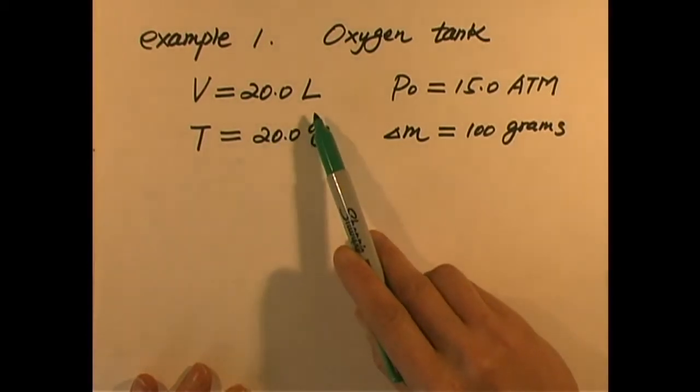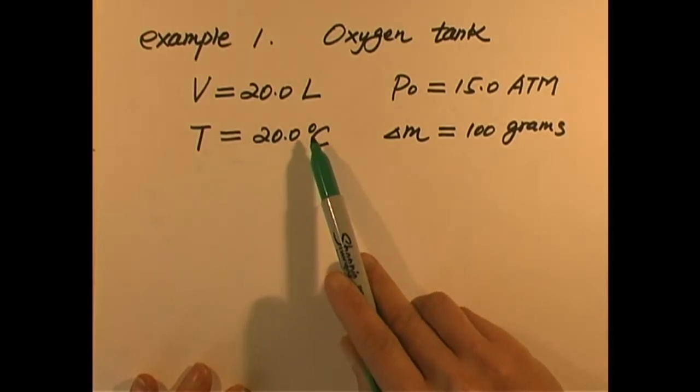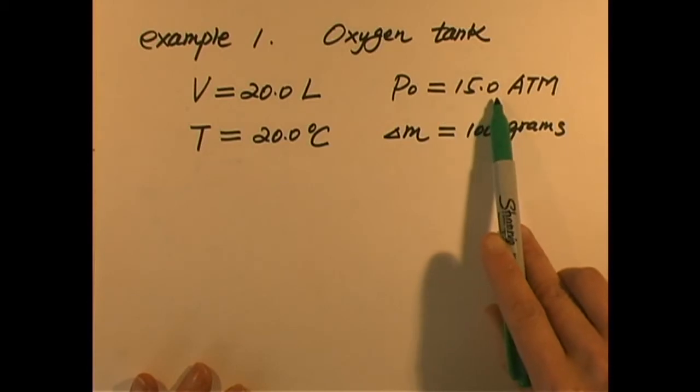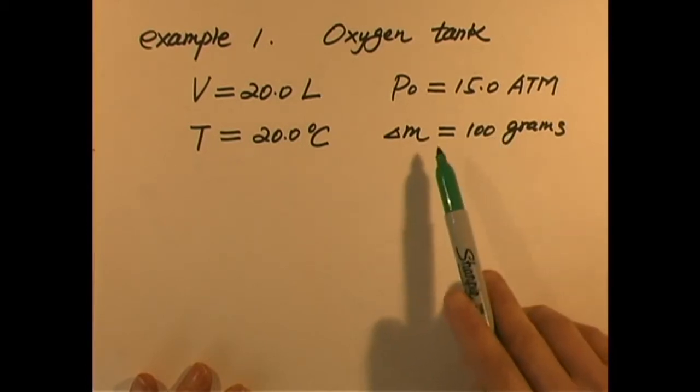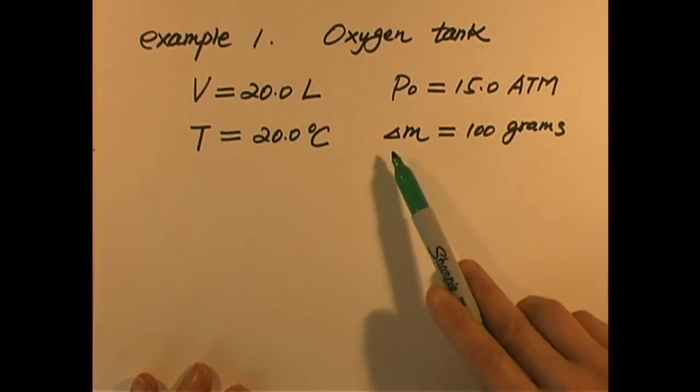Volume is 20.0 liters, and at room temperature 20.0 degrees Celsius, this is oxygen tank. At that time, while it contains oxygen inside, it must have a pressure more than atmosphere. So the pressure of oxygen inside is 15.0 atm. Now let's say we start to use oxygen. Let's say we used up 100 grams of oxygen by doing an experiment. Delta m is the amount of mass that we used. So there is less oxygen in the tank than before.